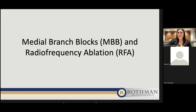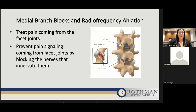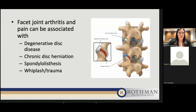Moving on to medial branch blocks and radiofrequency ablation. The goal of these procedures is to treat pain coming from the facet joints — those joints on the posterior aspect of the spine — by blocking the nerves that innervate them. Facet joint arthritis and pain can be associated with degenerative disc disease, chronic disc herniation, spondylolisthesis (shifting of vertebral bodies on each other), as well as whiplash and trauma. Anything that changes the height or alignment of the vertebral bodies causes irritation to those back joints. As disc height is lost, those joints make more contact with each other and create arthritis, just like any other joint in the body.